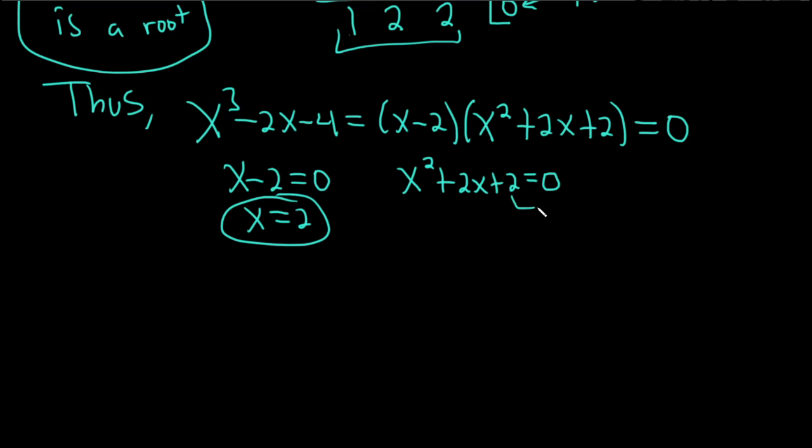So to complete the square, we'll move the 2 over here, subtract it over. And now we're going to complete the square. So basically, you take the coefficient of x, divide it by 2, and square it.